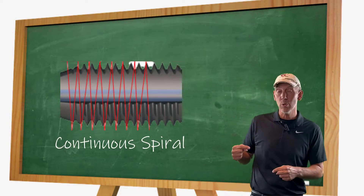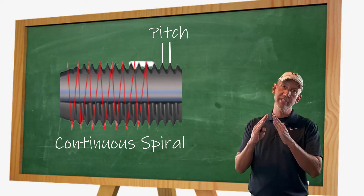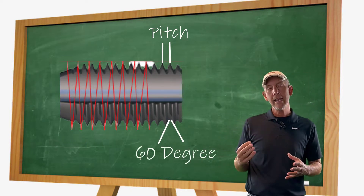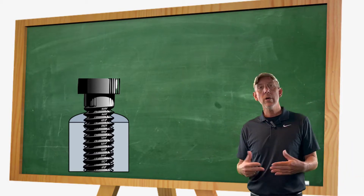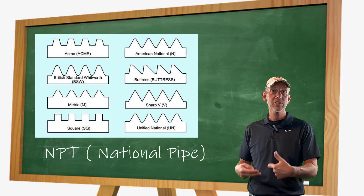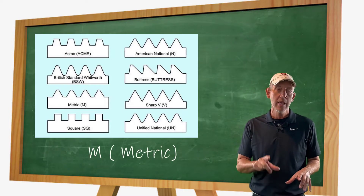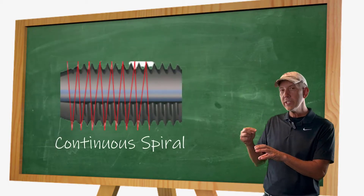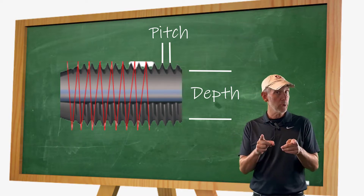A thread is basically a continuous spiral with a pitch — a distance between each one of those spirals — and mainly those are 60 degrees. Those lobes are 60 degrees, and it makes a thread that locks into a mating part, either on an OD or an ID. Threads can be different dimensions or forms: NPT, which is National Pipe Thread, UN, metric threads. There are a lot of different kinds, but they're all based on a continuous spiral with a pitch and a depth to make the mating part lock in.